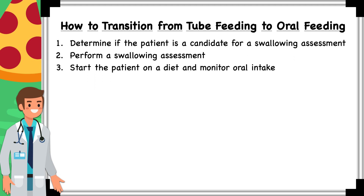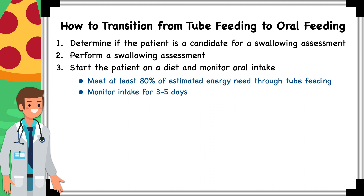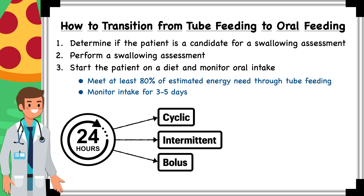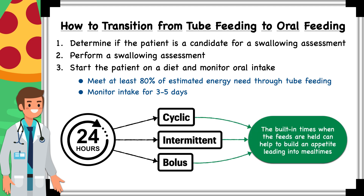Patients who passed the three-ounce water swallow challenge or are cleared for oral feeding by the SLP progress to the third step: to start the patient on a diet and monitor oral intake. At this stage, I recommend meeting at least 80% of the estimated energy needs through tube feeding and monitoring intake for three to five days. If the patient is on a continuous infusion, you can consider transitioning them to a cyclic, intermittent, or bolus feeding regimen, because the built-in times when feeds are held can help to build an appetite leading into meal times.